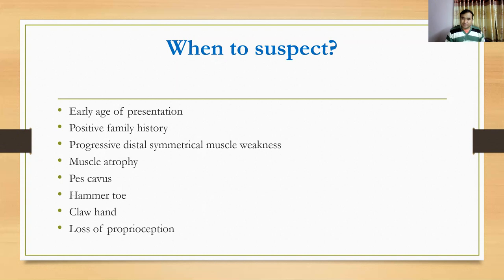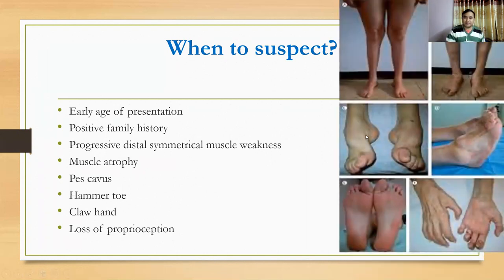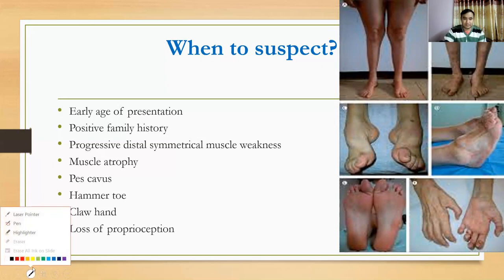Presence of muscle atrophy usually suggests hereditary neuropathies. Features like pes cavus — as you can see in the third picture — and hammertoe, which you can see in the fourth picture, and in the first picture here you can see the hammertoe and pes cavus.